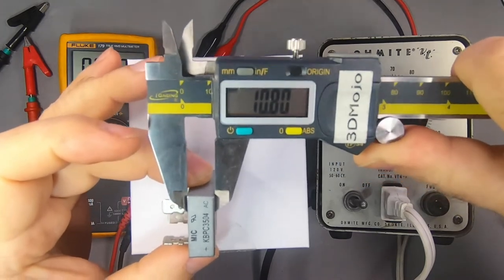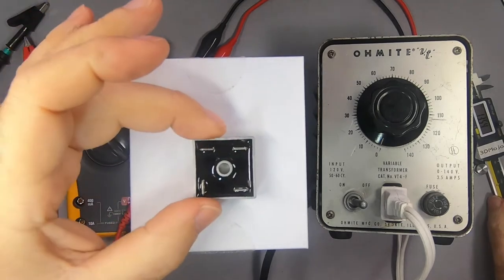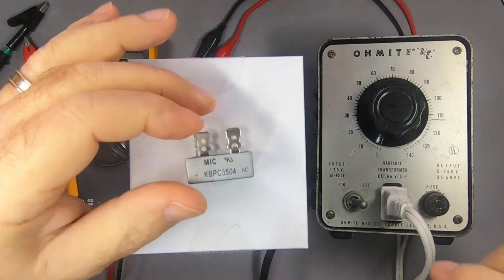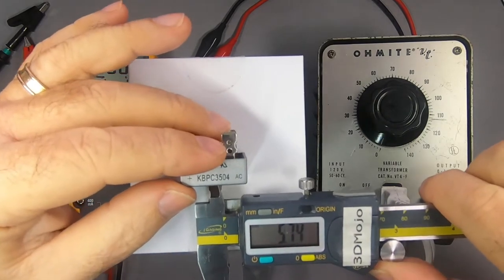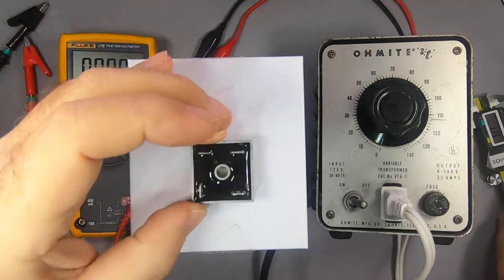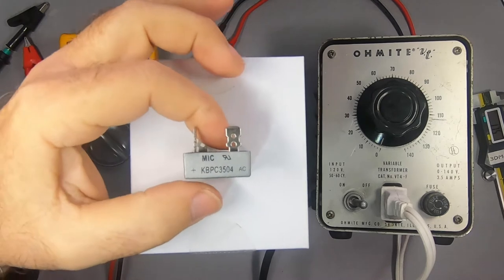They rate the hole as a number 10 standard screw - I haven't measured that in metrics, but that's about a 5.78 millimeter hole here. The nice thing about these is that they're quite easy to identify the terminals.